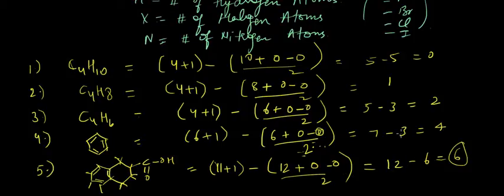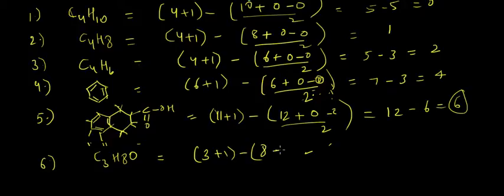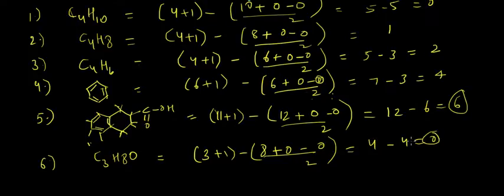What is the DBE of this compound, C3H8O2? DBE is C plus 1 minus H is 8, sorry C3H8O2, minus X which is oxygen so minus 2, divided by 2. This gives me 4 minus 4, DBE is 0.